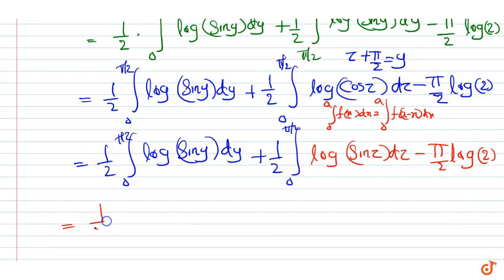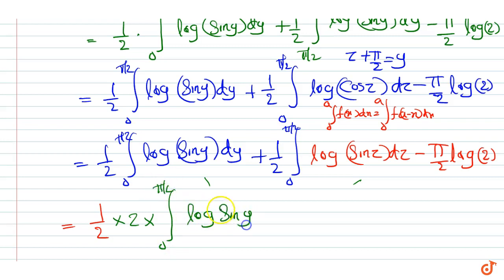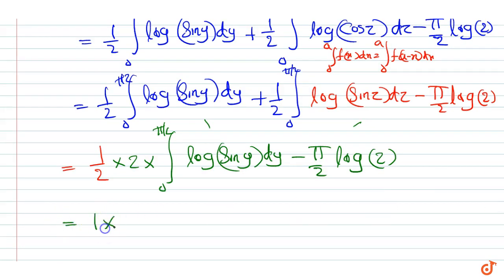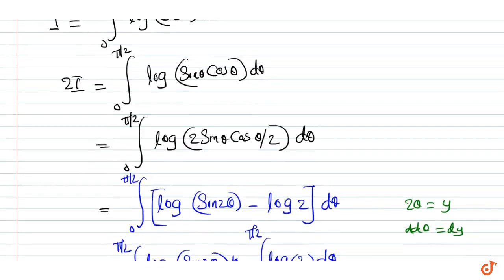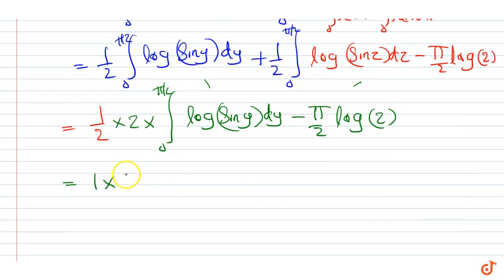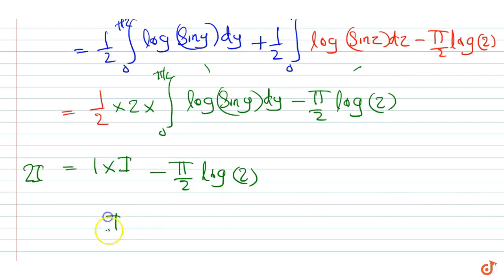These two integrals are the same, so we can write 2I equals one half times 2 times integral from 0 to pi by 2 of log(sin y) dy, minus pi by 2 log 2. This integral is nothing but I. Therefore, 2I equals I plus I, giving 2I minus I cancels, so we arrive at 2I equals minus pi by 2 log 2. Therefore, I equals minus pi by 4 log 2. That is our answer.